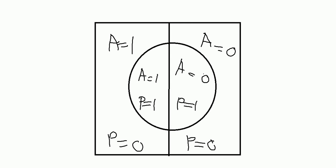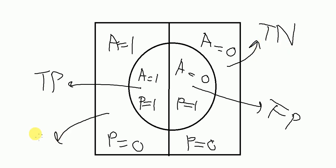So if I have A equals one, P equals one, this is true positive. Then this is false positive. Then you have true negative here, and next up you have false negative here.